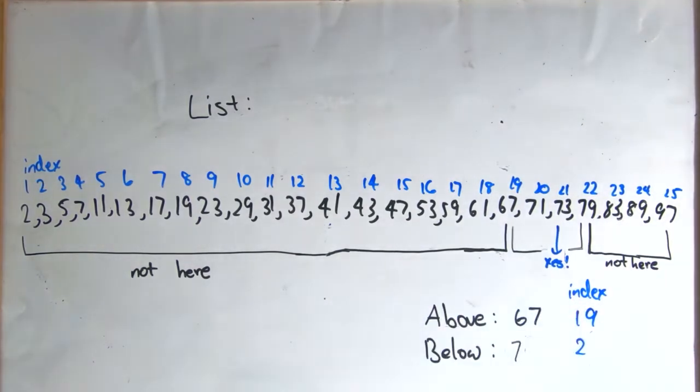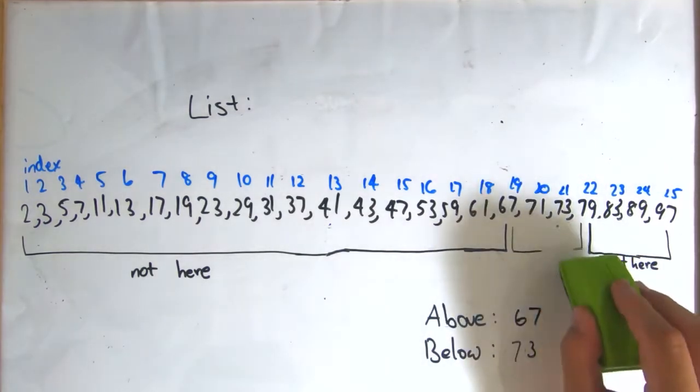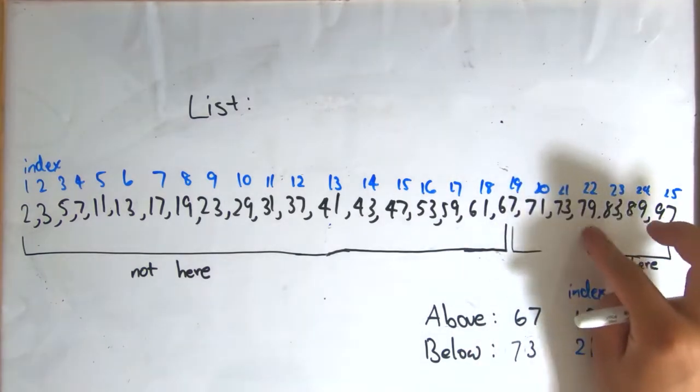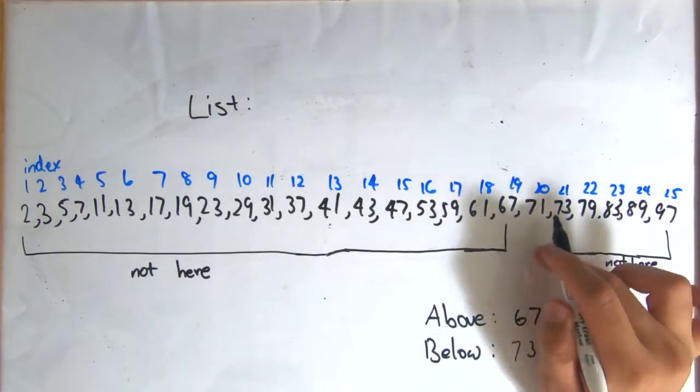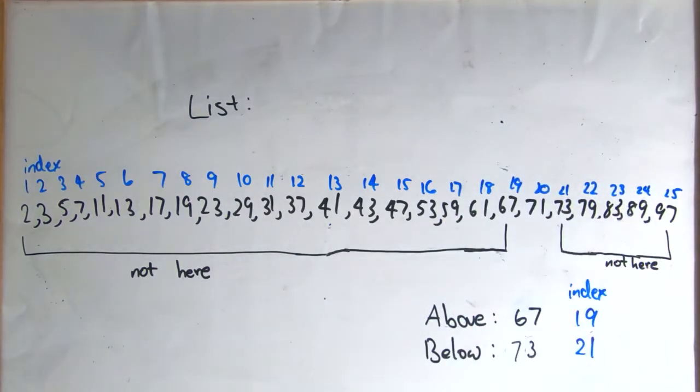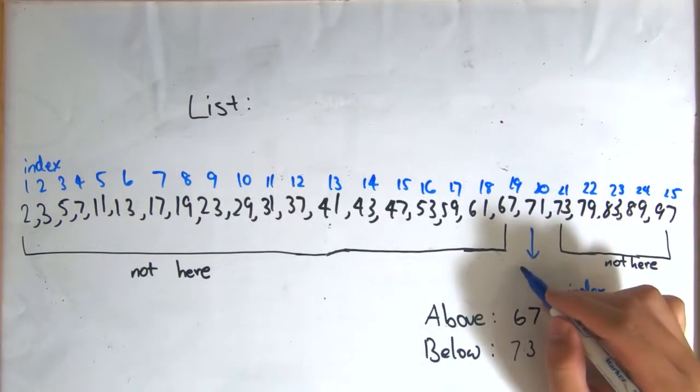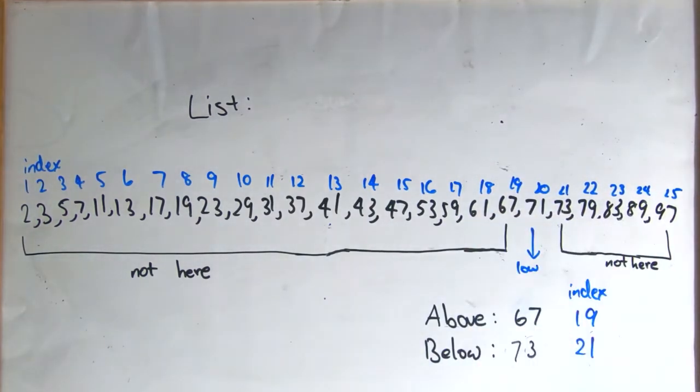Now let's say the number you were looking for was instead 72. Now you know the number has to be between the 19th or 21st number, and so you look at the midpoint again, which is the 20th number, which is 71.